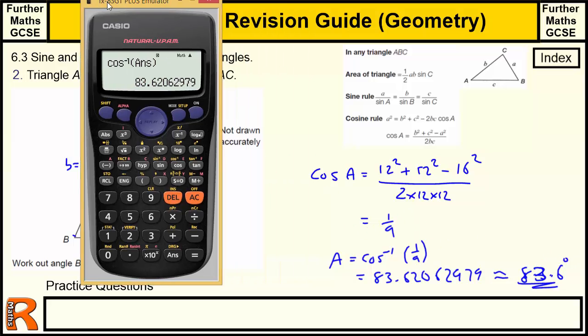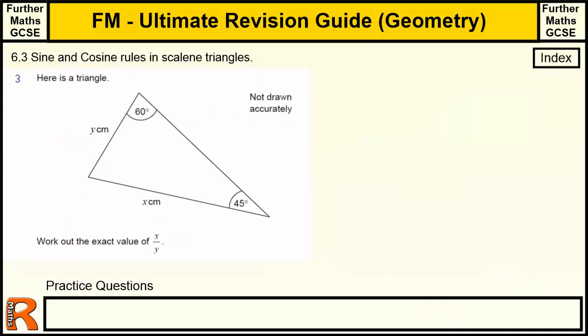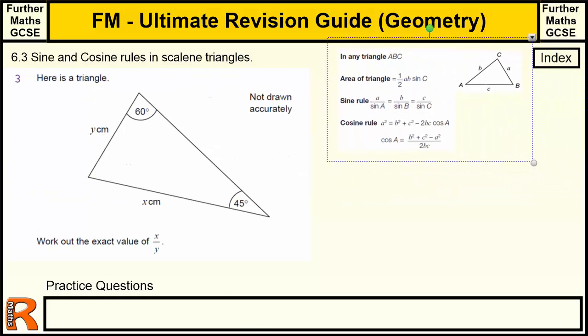Let's have a look at the last one. So this one's going to be using the exact values of 45 and 60 degrees for sine and cosine. Let's bring in the rules again. So we want the exact value for x/y. We have two angles, two sides. Sides are opposite the angles. We're going to use the sine rule. So let's just call this a and little a, b and little b, and put in the values for that.